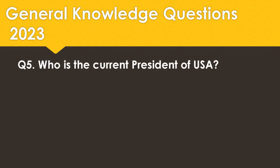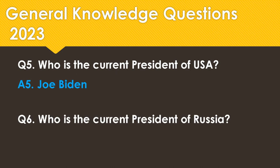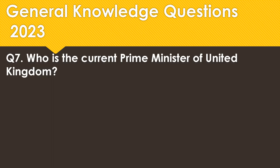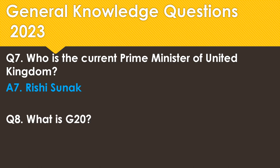Who is the current President of the USA? The right answer is Joe Biden. Who is the current President of Russia? It is Vladimir Putin. Who is the current Prime Minister of the United Kingdom? It is Rishi Sunak.